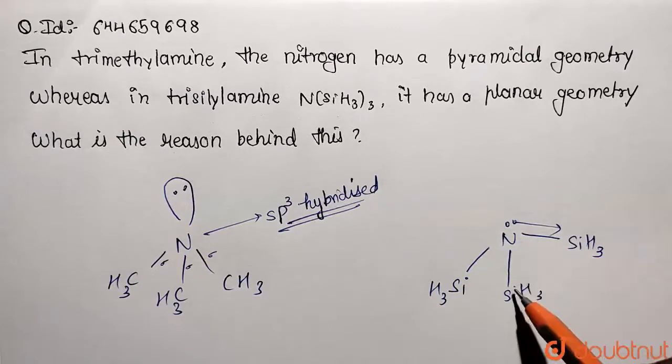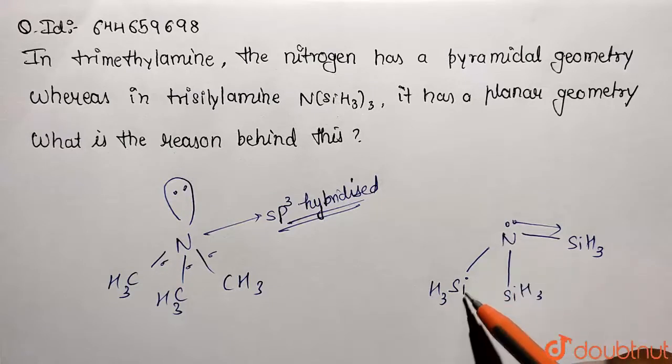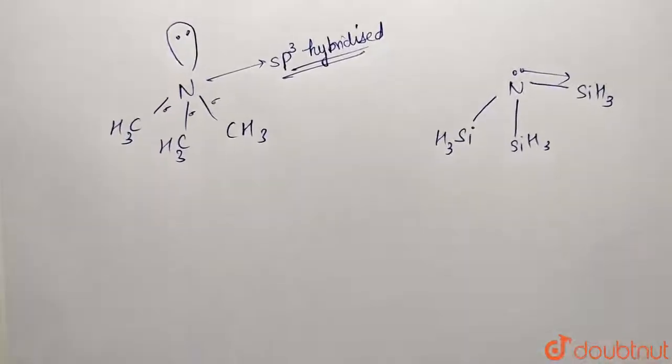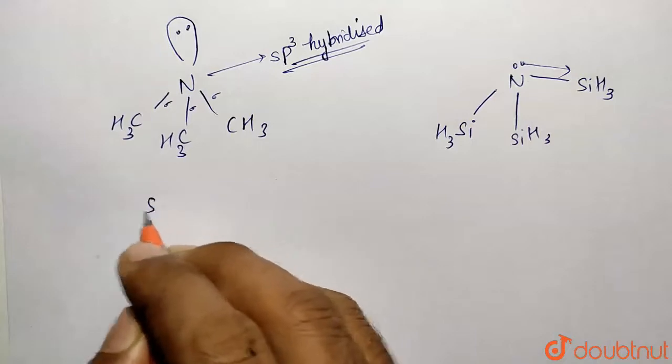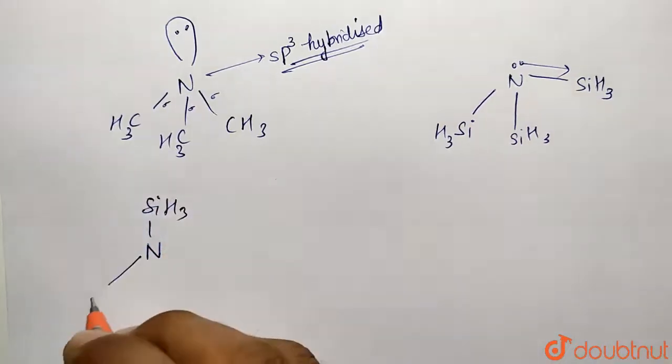So this can be represented in a series of structures which are represented like this. I am drawing for you, so you can take the nitrogen and SiH3 over here, here also SiH3, and this side SiH3.